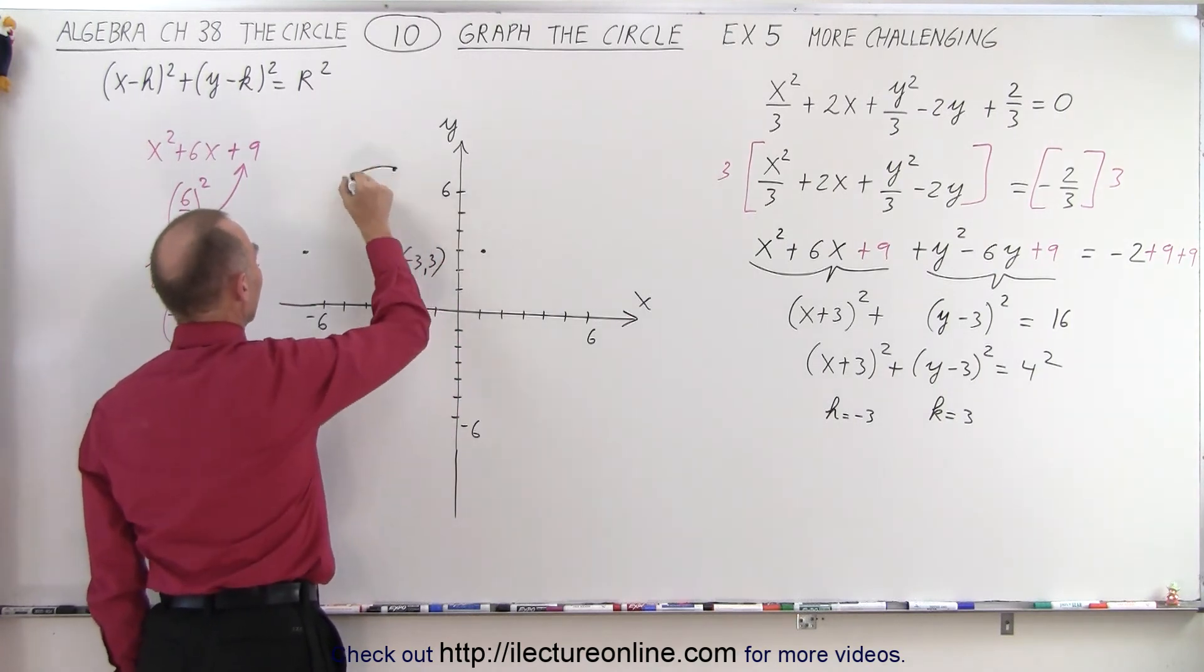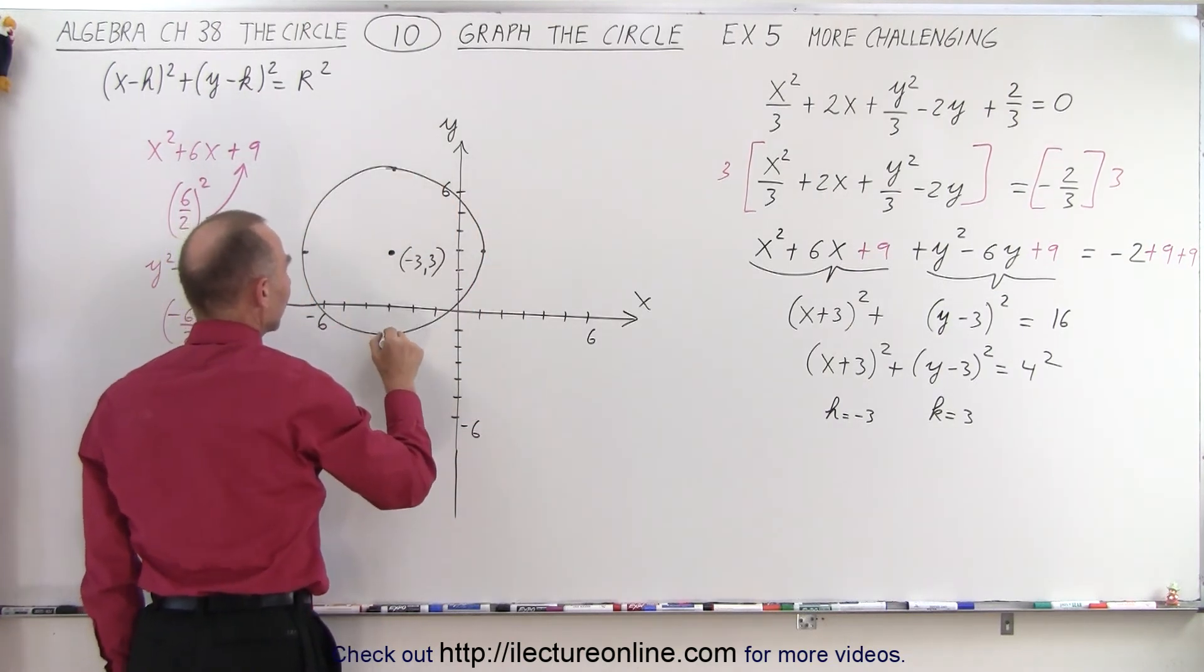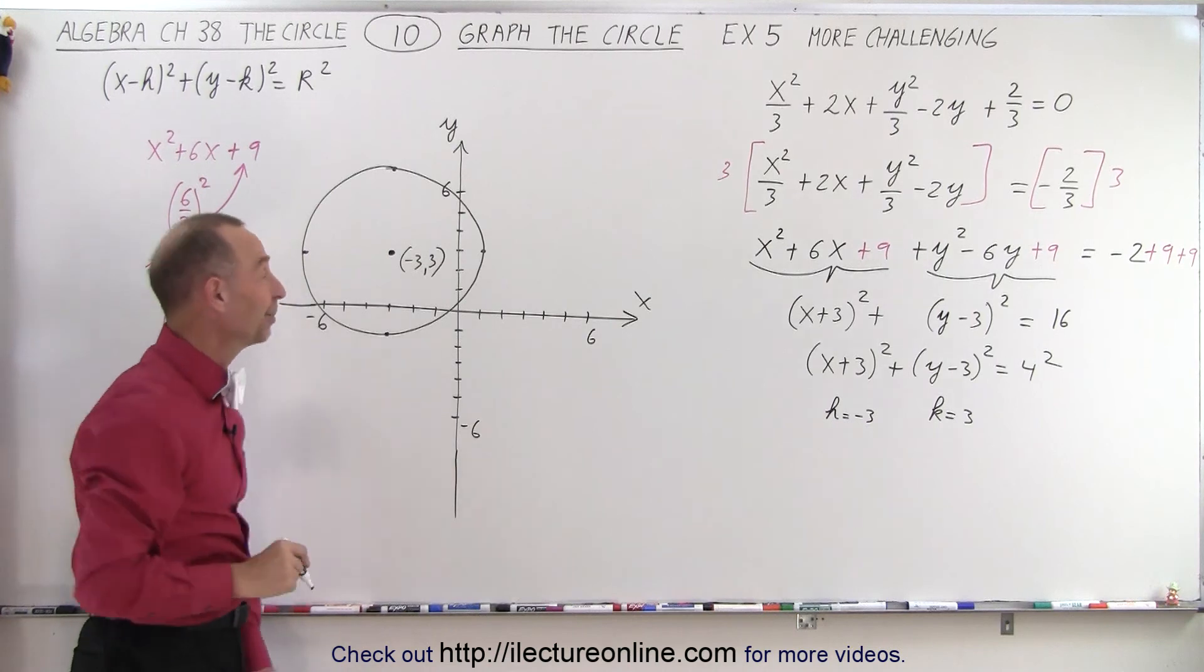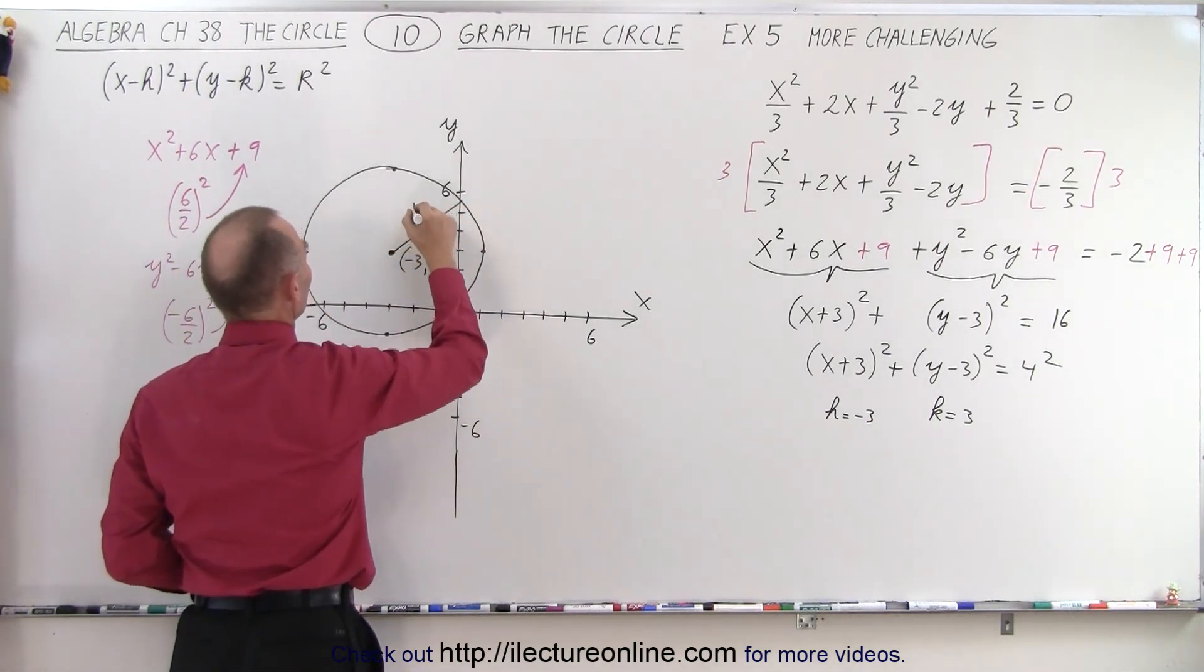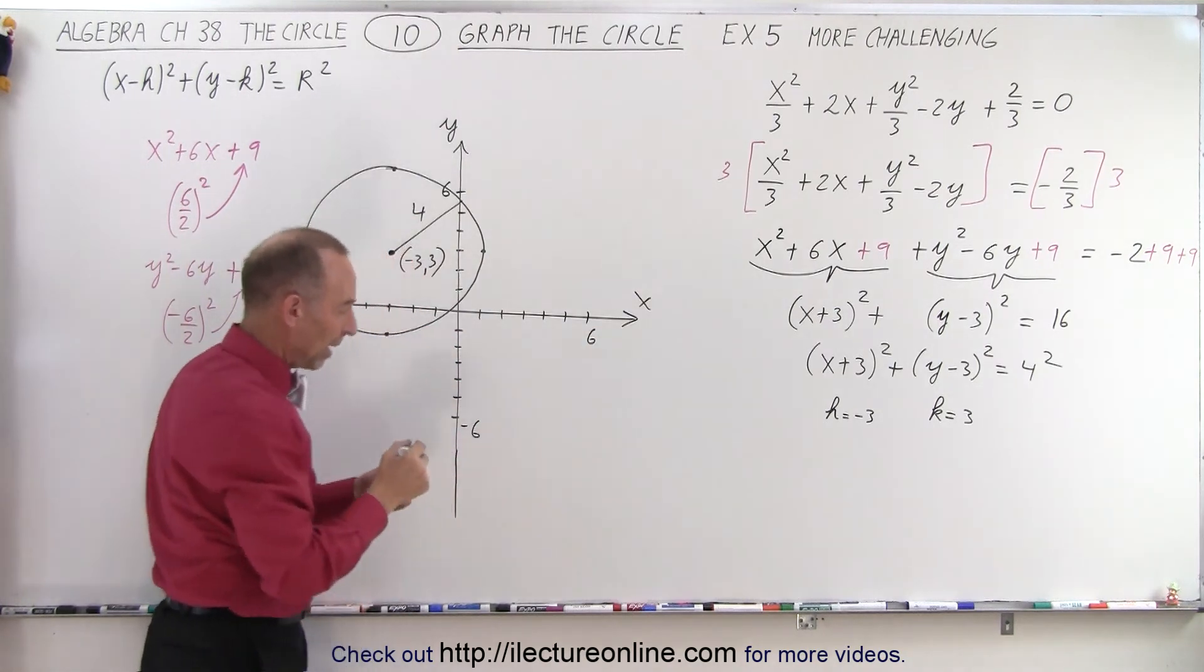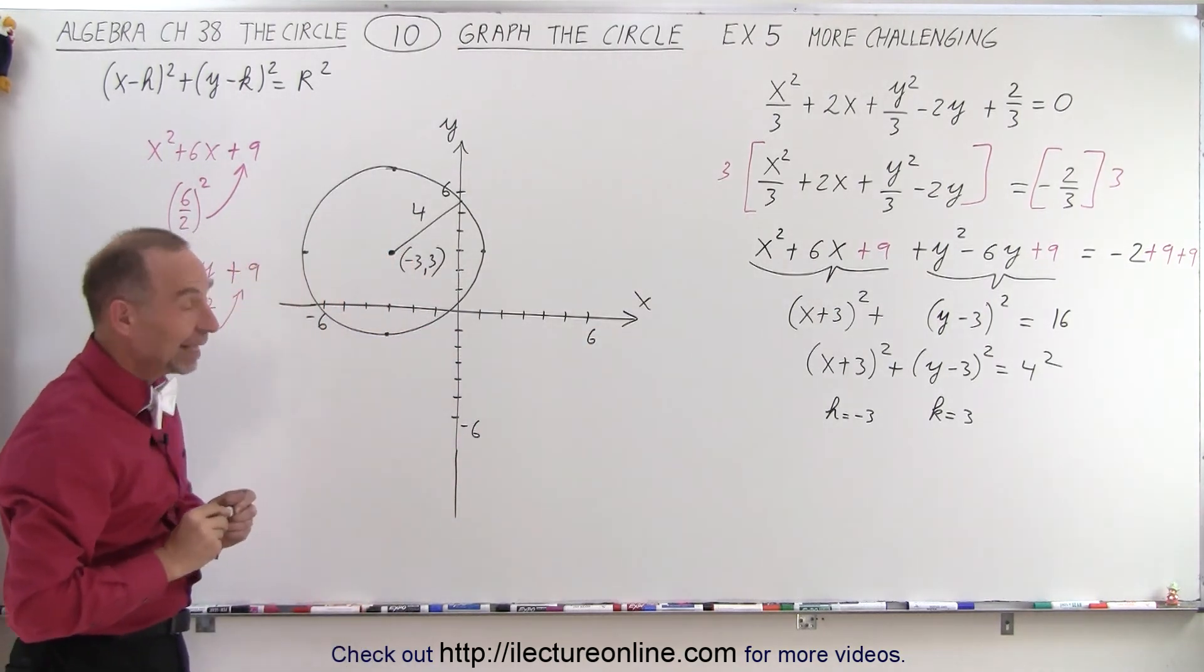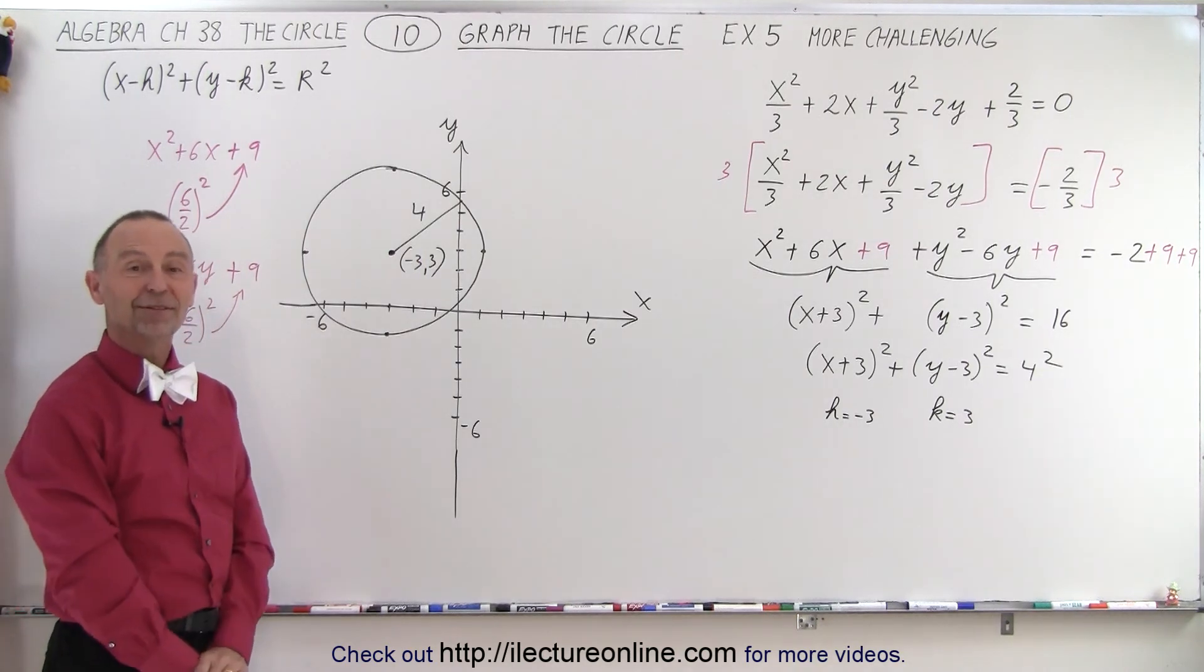And if we connect all those dots, like that, move the dot a little bit. We'll cheat a little bit to make it look a little better. But there we go, we have a circle. The radius of the circle is equal to 4. The center of the circle is at minus 3, 3, based upon our equation right there. And that is how it's done. And we're done with the series.